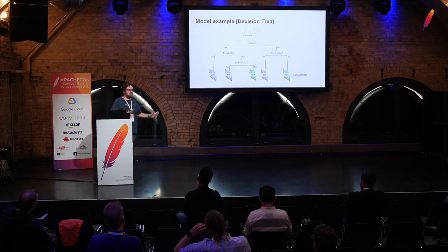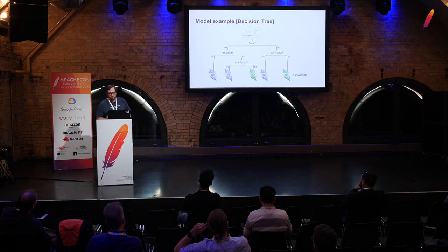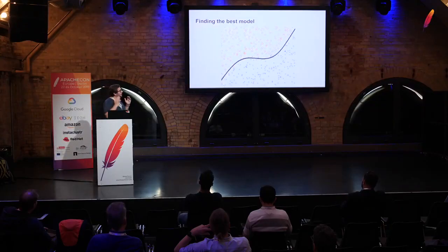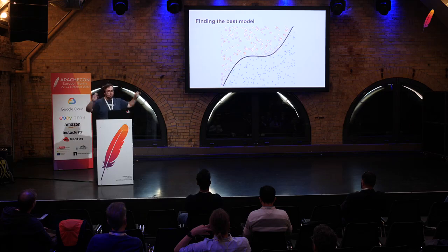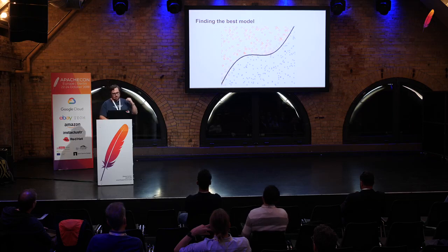A model can be represented not only as a linear equation but also as a tree. For example, this slide shows a Titanic passenger dataset survival prediction model as a binary tree. We are also trying to find a curve that divides a set of points into two classes — finding a curve that separates these classes in the best way according to the loss function.